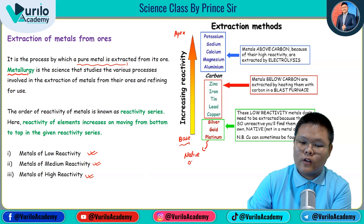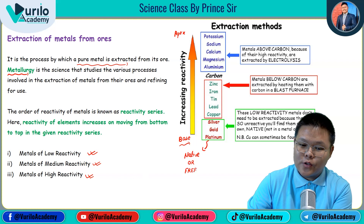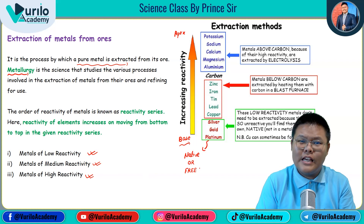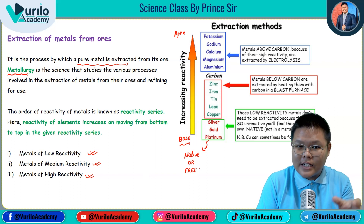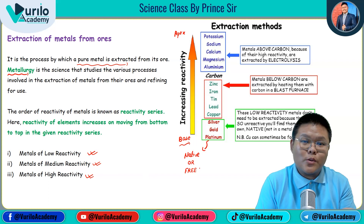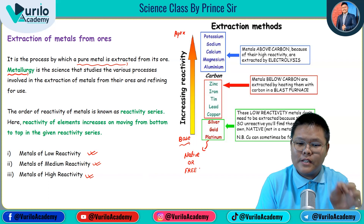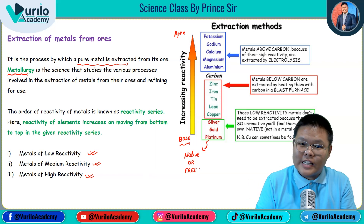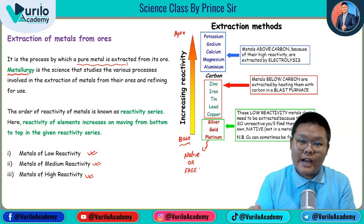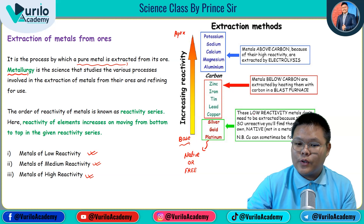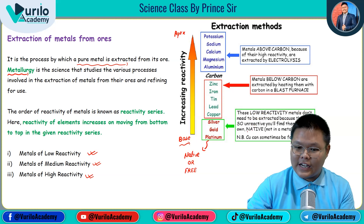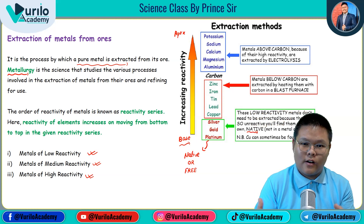We can extract low reactivity metals in their native or free state. You have a high chance of finding them in a free state because of their low reactivity. They can also be found in compound state. Remember that low reactivity metals don't need much extraction processing because they are so unreactive — you will find them in their native state, or sometimes as metal oxide or metal sulfide forms.